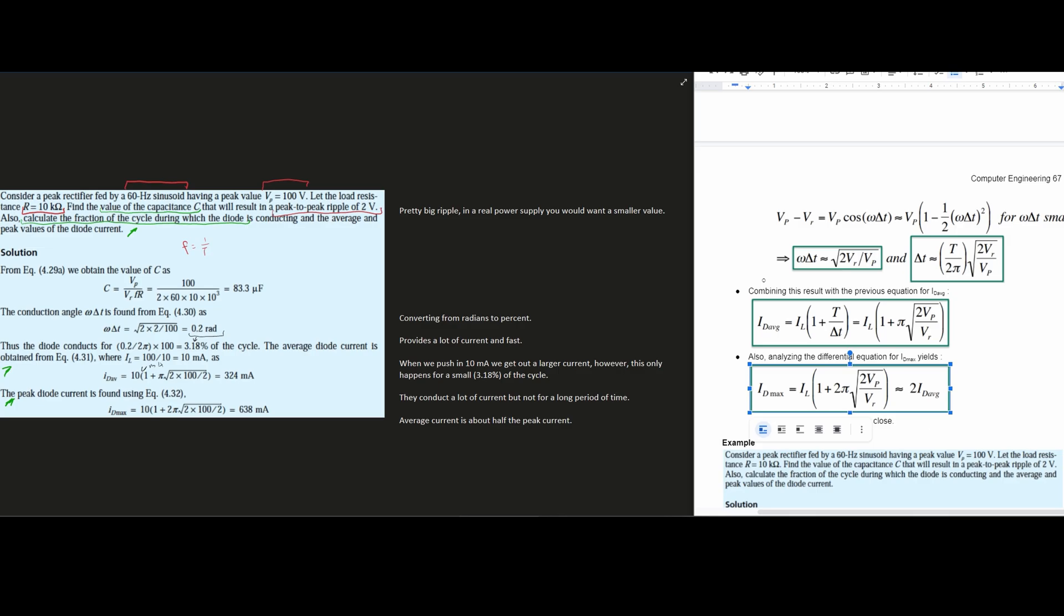We can see that when we push 10 milliamps, we're going to get a larger output. However, this only happens for 3.18% of our cycle, so it's all coming together. They conduct a lot of current, but not for a long period of time. The average current is going to be about half of our peak current.